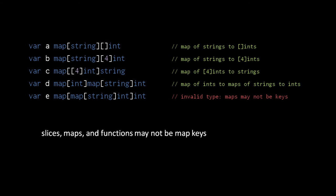So far we've only seen maps with string keys and int values, but the keys and values may be any types. With three exceptions — slices, maps, and functions may not be map keys. Everything else, though, is fair game, including arrays and structs. The reason for this restriction is that map keys need to be comparable, preferably with good efficiency. With functions, it's not clear what a comparison would mean — would two anonymous functions with different closure variables be considered equal? With slices and maps, we can reasonably define what it means for them to be equal, but comparing them for equality would potentially be very inefficient.